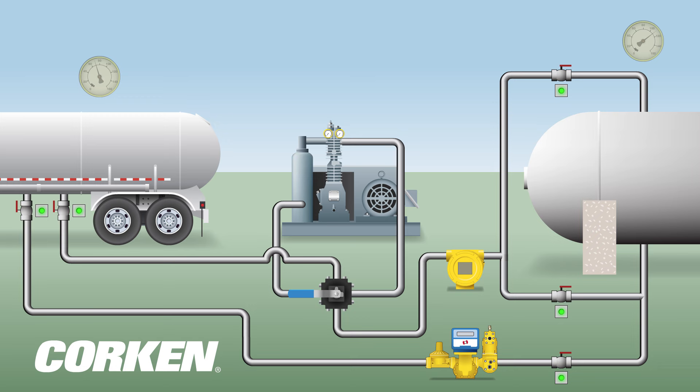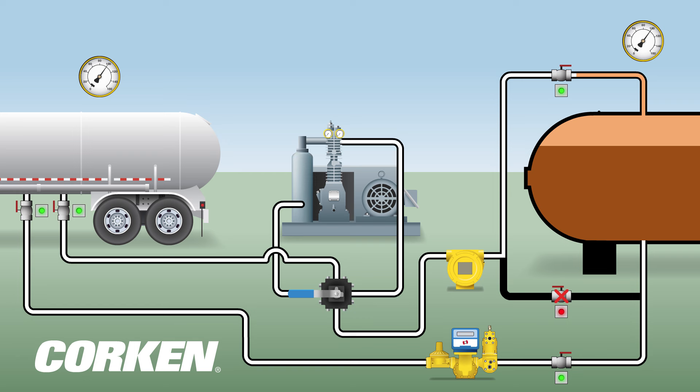Before the transfer process begins, pressure is equalized between both tanks. When the compressor is started, it draws vapor from the top of the storage tank through the transfer piping.